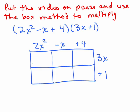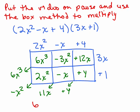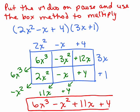Let's fill these in: we've got 6x cubed, negative 3x squared, 12x, plus 4, negative x, and 2x squared. You may have written those six terms in a different order, but they should be in the same boxes. Adding the like terms along the diagonals: we've got 6x cubed, negative x squared, and 11x — remember this is negative 1x and plus 4 — so the final answer is 6x cubed minus x squared plus 11x plus 4.